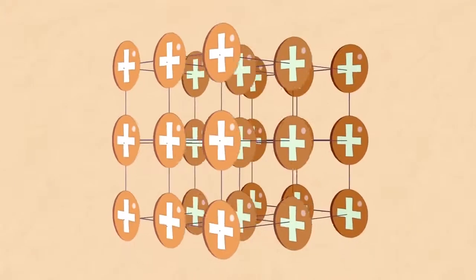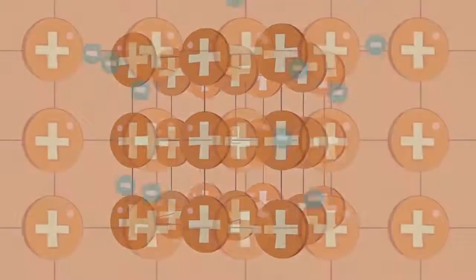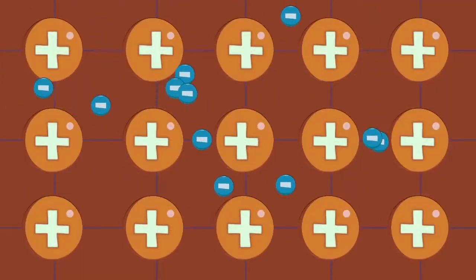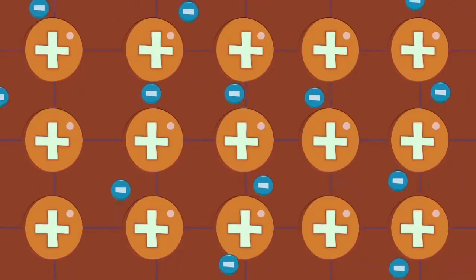In summary, metals contain lattices of positively charged ions. The electrons are loosely held and are free to move between the metal atoms. When a voltage is applied, a current is able to flow.